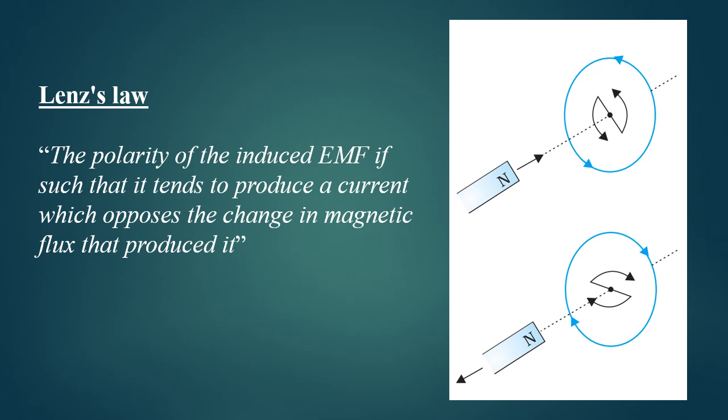German physicist Friedrich Lenz deduced a rule known as Lenz's law, which explains the polarity of induced EMF in the equation E is equal to minus d phi by d t.